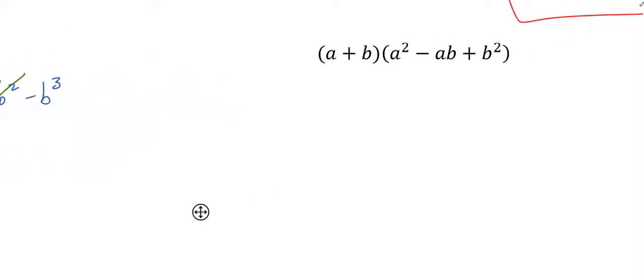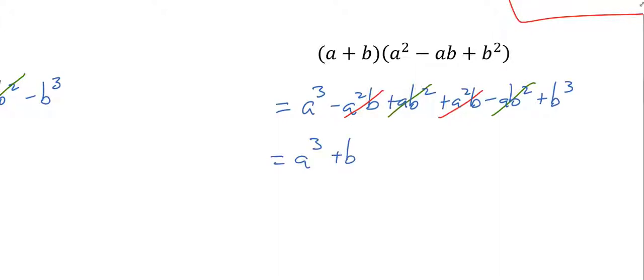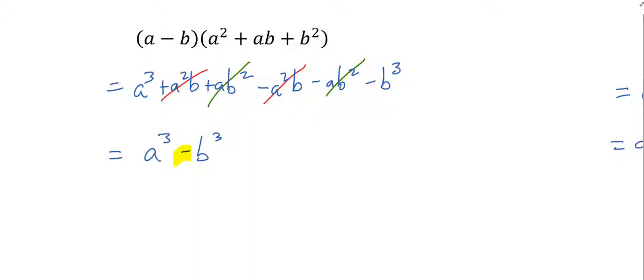Again, don't worry if you're not seeing it fully clearly yet, you will when we do an example. So that's for a difference of cubes. What about the sum of cubes: (a + b)(a² - ab + b²). a times a² is a³, a times negative ab is minus a²b, plus ab² plus a²b minus ab² plus b³. The only last thing you might want to notice is the sign here is the same and then the sign there is different. That one's always positive.